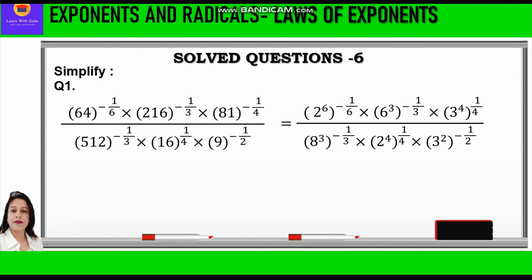So what we will do: 64 we write as 2 raised to power 6; 216 we write as 6 cubed; for 81, instead of 9 squared we write 3 raised to power 4; then 512 we write as 8 cubed; 16 we write as 2 raised to power 4; and 9 we write as 3 squared — so that the power inside and the power outside can cancel.